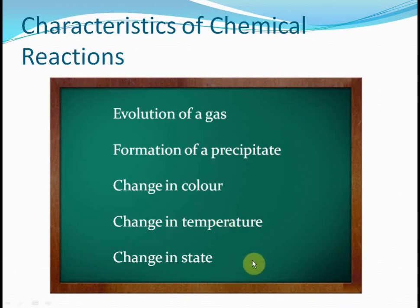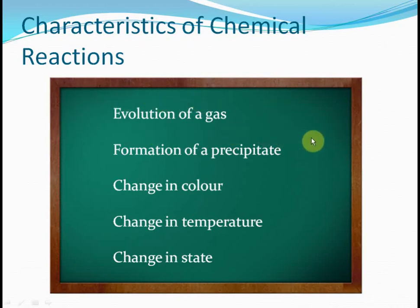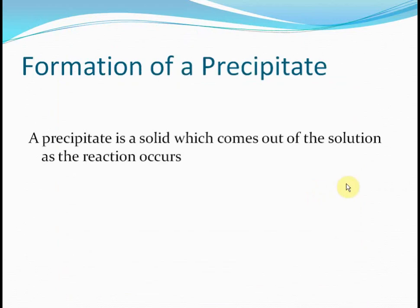Sometimes the substance gets heated up or becomes colder, and then you realize a chemical reaction has occurred. Sometimes a change in state occurs — a solid may actually become a gas — and that tells you a chemical reaction has taken place. We just saw that when zinc reacts with sulfuric acid, hydrogen gas is evolved. Formation of a precipitate tells us a chemical reaction is occurring. A precipitate is a solid which comes out of solution as the reaction occurs — you might see some colored precipitate or white granules coming out of the solution.